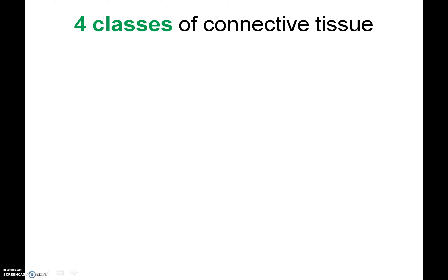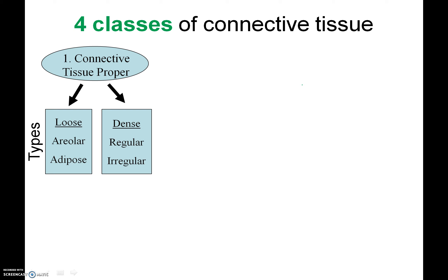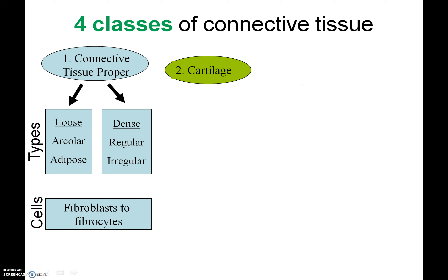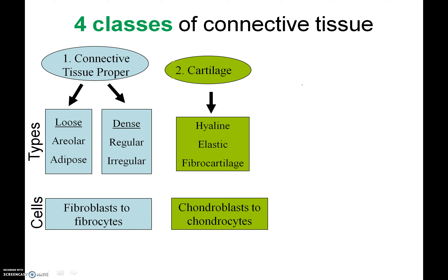So let me briefly cover the four classes of connective tissues. There's connective tissue proper — the broadest category — which includes loose and dense connective tissues. Under loose, we have areolar and adipose (adipose is your fat). Dense connective tissue proper contains regular and irregular subtypes. All connective tissue proper cells will have fibrocytes; fibroblasts are the immature forms that develop into fibrocytes. The second class is cartilage, with three main types: hyaline, elastic, and fibrocartilage. The cells of cartilage are chondrocytes, with chondroblasts as their immature form — chondroblasts develop into chondrocytes.